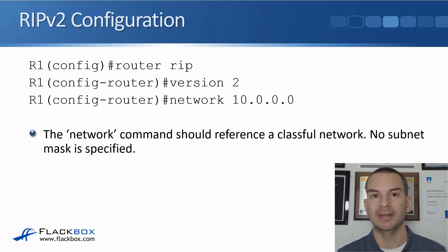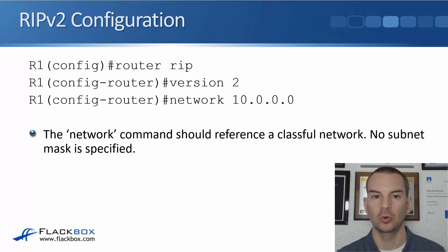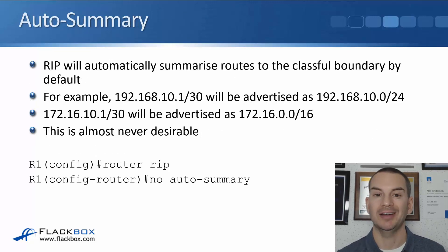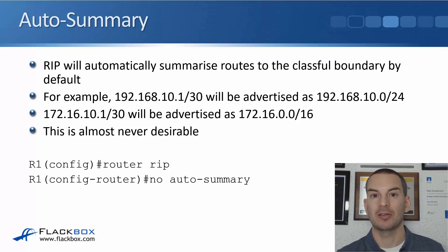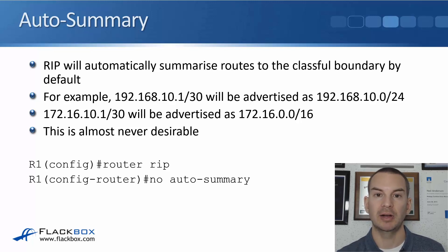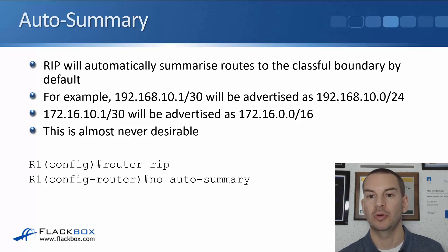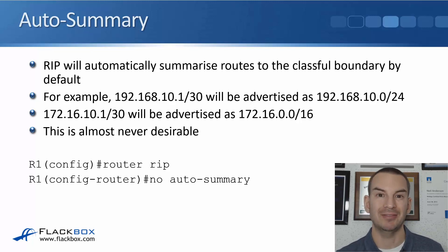For example, if an interface has IP address 10.1.1.1/24, you don't say 'network 10.1.1.0' — you say 'network 10.0.0.0'. RIP will automatically summarize routes to the classful boundary by default. So if you have an interface with 192.168.10.1/30, it will be advertised as 192.168.10.0/24, because any address beginning with 192 is a Class C address with a default mask of slash 24. Rather than advertising the slash 30, it summarizes to a slash 24.